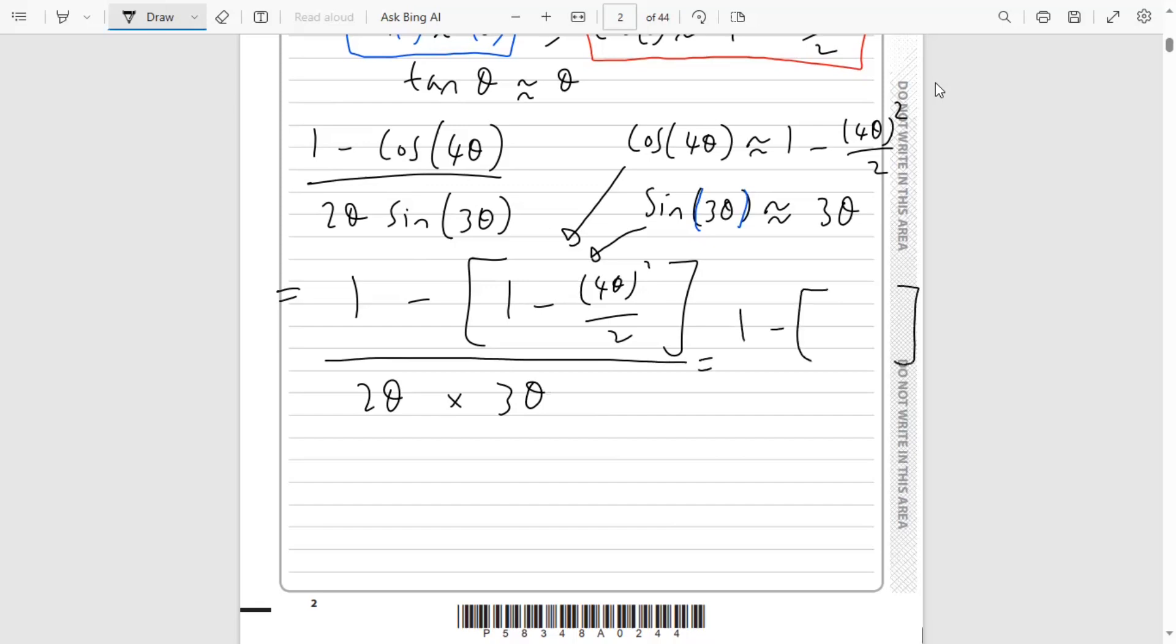Let's tidy this up. We've got 1 minus [1 - 16θ²/2] all divided by 2θ times 3θ. That's 2 times 3 which is 6, and θ times θ is θ² on the bottom, so we get 6θ².